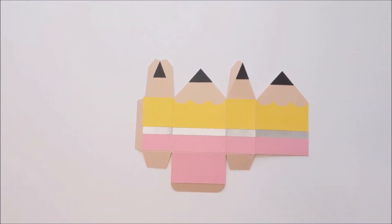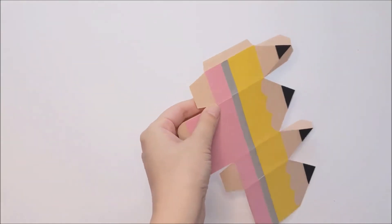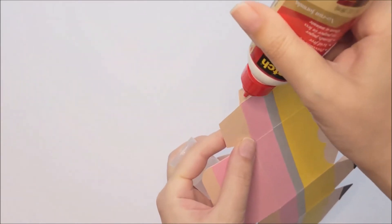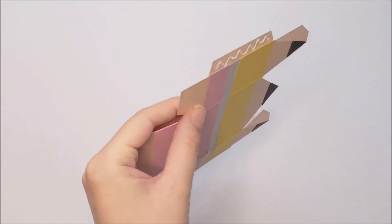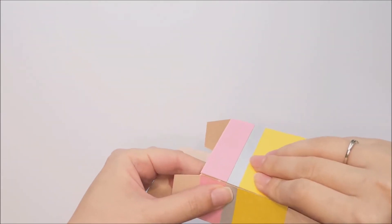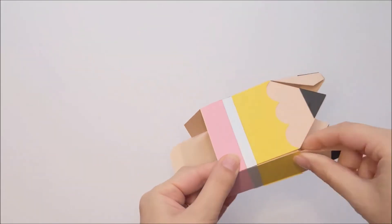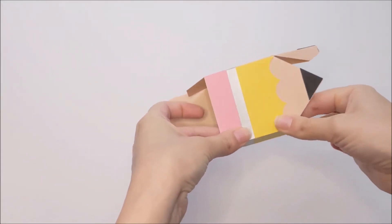Now we can assemble our box shape, so we're going to place glue along this side tab here. And then we're going to fold it around to meet the other side. And once that's in the right place, just press it firmly until the glue holds.